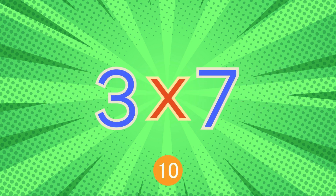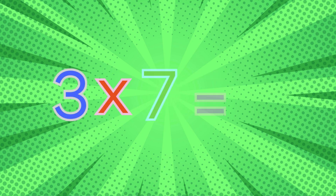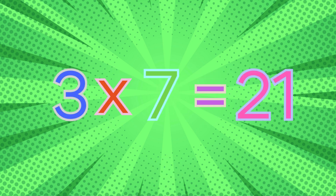Three times seven. Three times seven equals twenty-one.